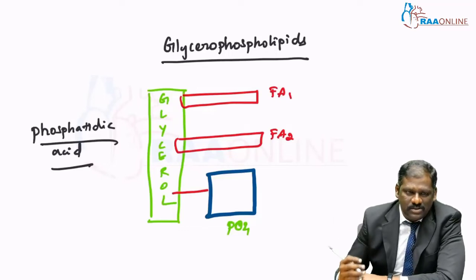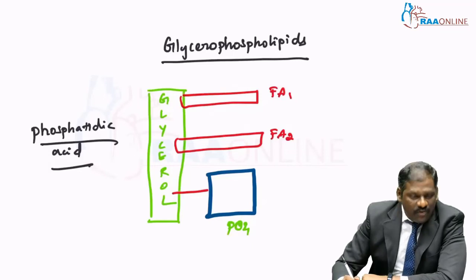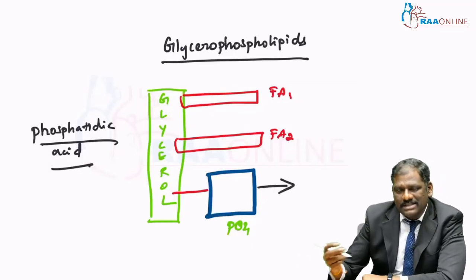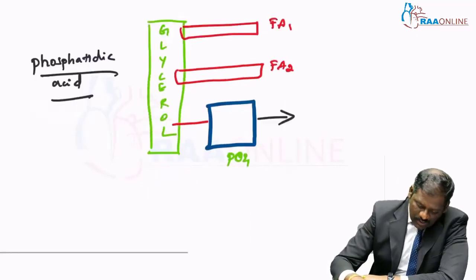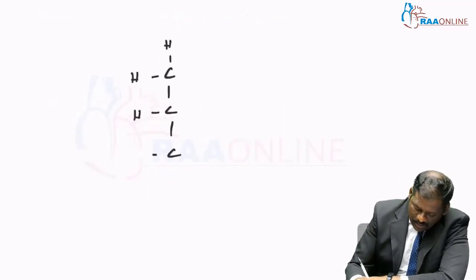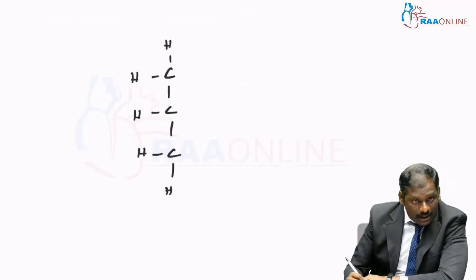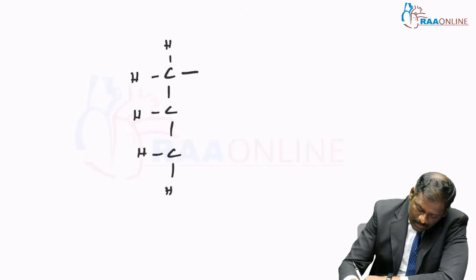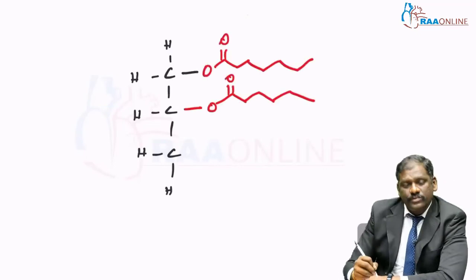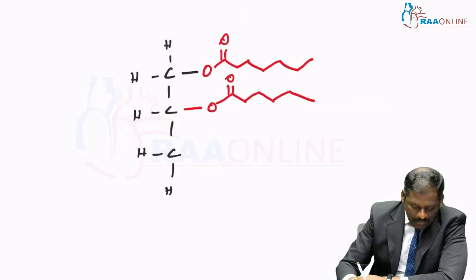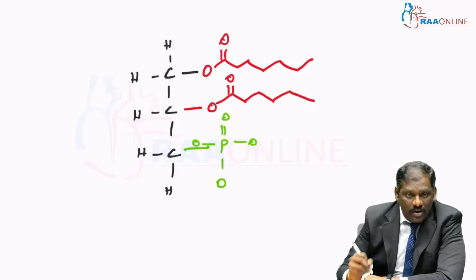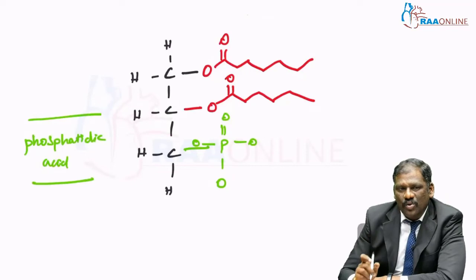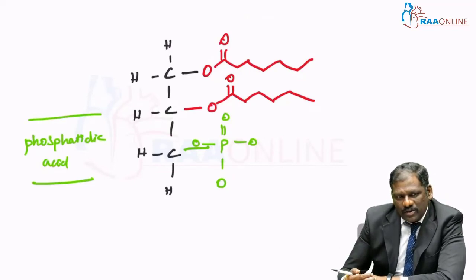To this phosphate group, various kinds of additional groups may come and get attached, giving rise to various types of glycerophospholipid. The structure of glycerophospholipid is: glycerol — a three-carbon containing alcohol — has fatty acids attached to the first carbon. To the third position a phosphate group is attached. This is the structure of phosphatidic acid, the basic glycerophospholipid, from which you derive all the glycerophospholipids.